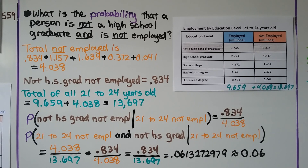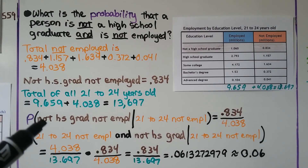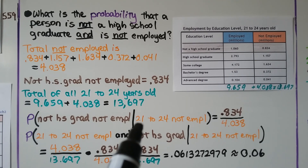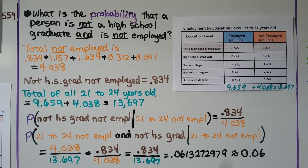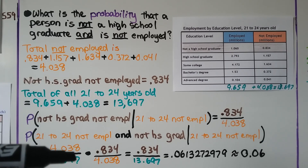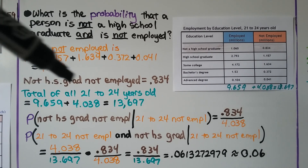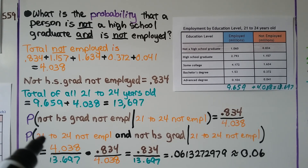The total of all the 21 to 24 year olds combined is 13.697. The probability of not a high school grad and not employed, given they are 21 to 24 year olds who are not employed: we write this as 4.038 over the total 13.697, multiplied by the not-high-school-grad-not-employed value 0.834 over the total not employed 4.038. The 4.038 cancels, and we're left with 0.834 over 13.697, which rounds to approximately 0.06.